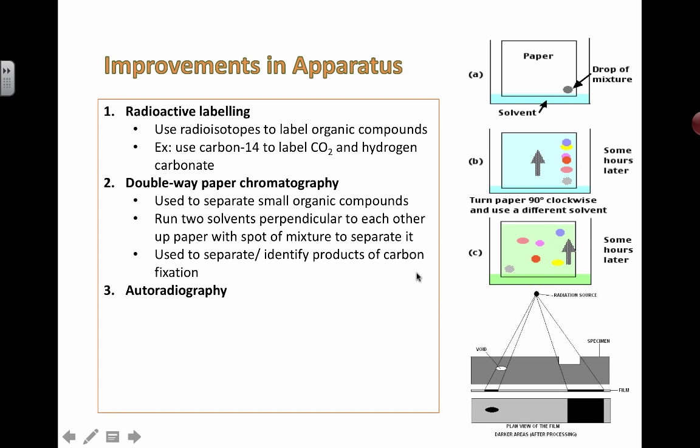One last technique or improvement in apparatus which is necessary for Calvin to carry out his experiments is autoradiography. This is just a fancy name for saying figure out a way to be able to see the radioisotopes. You're basically using film and because this carbon-14 gives off a little bit of radiation, if you put some photosensitive film here, it can actually detect the radiation that's coming off and then you can actually see the patterns.